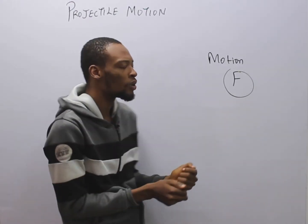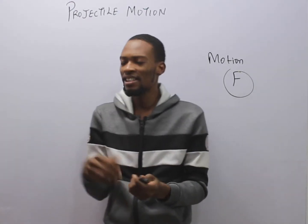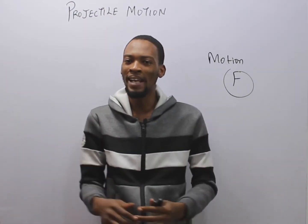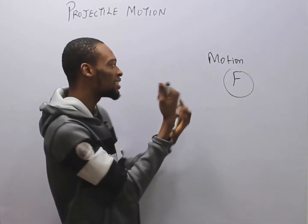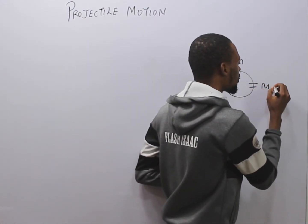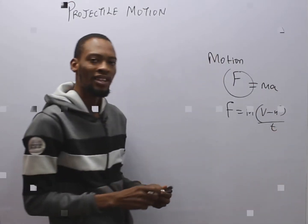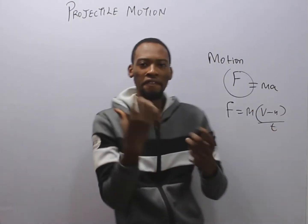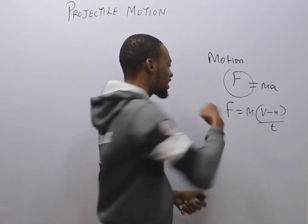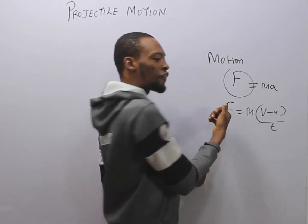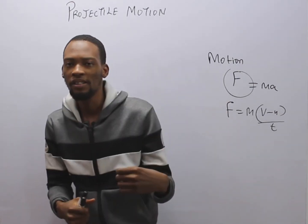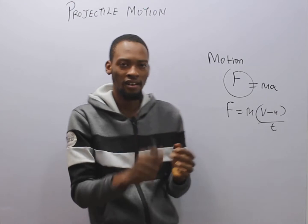In the second law, Newton stated that the change of momentum of a body is proportional to the force applied and takes place in the direction of the force. From there, we get that force equals mass times acceleration. The third law states that for every action there is an equal and opposite reaction. If I hit this board, the force with which I hit the board is the same as the force with which the board pushes me — that is action and reaction.